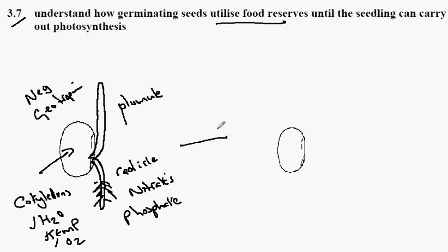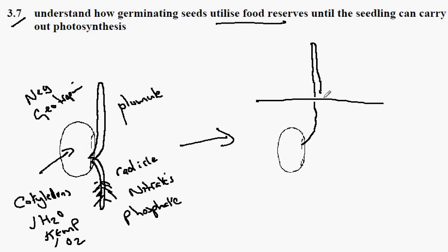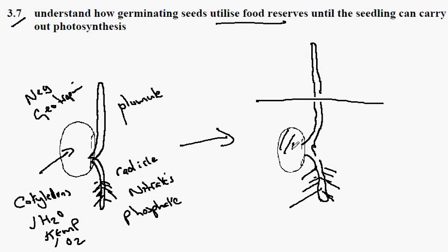This process carries on into the soil until the plumule is able to break through the soil into the air, at which point we have a more developed root system and so forth.